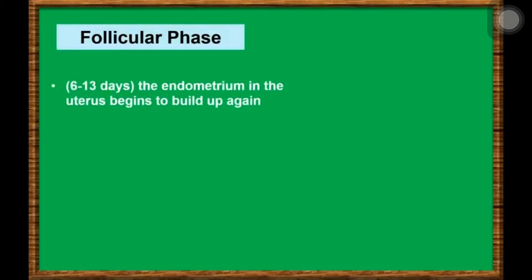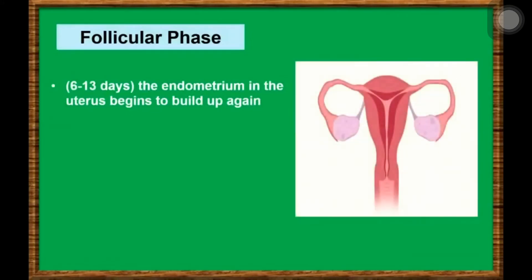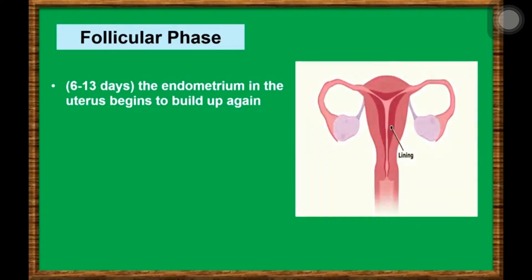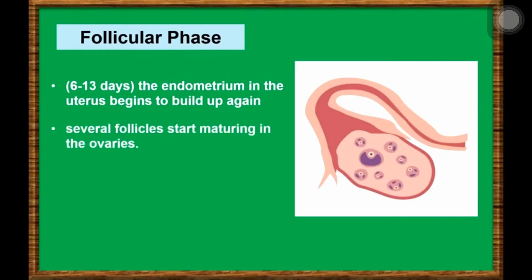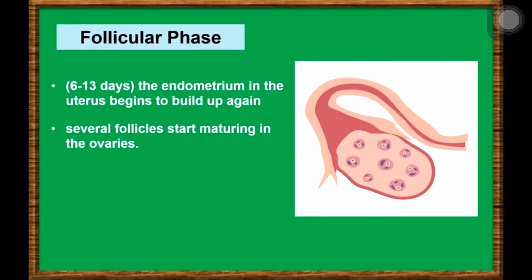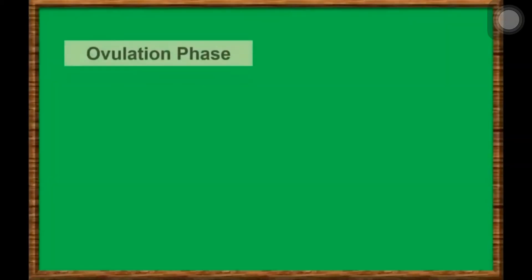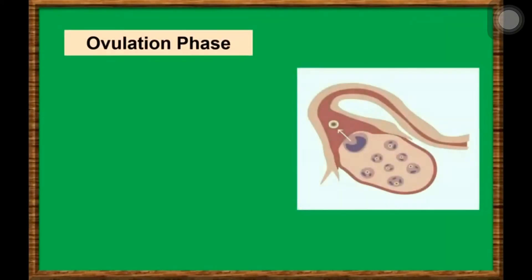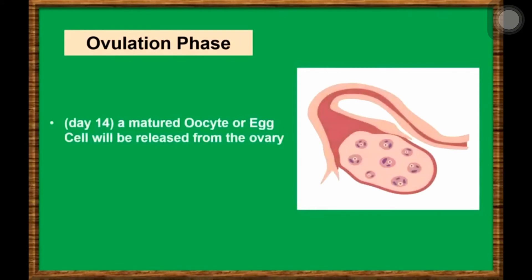The next phase of the cycle is called the follicular phase. After menstruation, the endometrium in the uterus begins to build up again. At the same time, several follicles start maturing in the ovaries. Only one of these maturing follicles will complete maturation. The rest will eventually undergo atresia and disappear. In the middle of the menstrual cycle, around day 14, the remaining mature follicle releases its matured egg cell from the ovary in the process of ovulation.